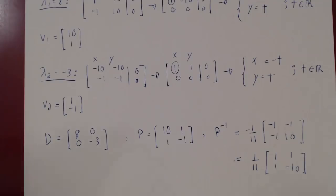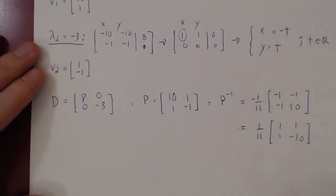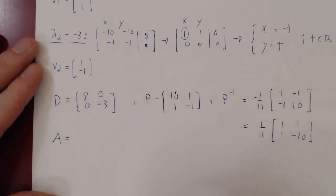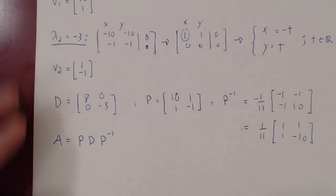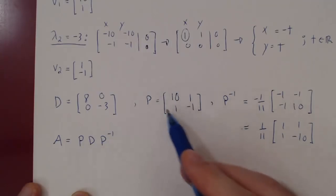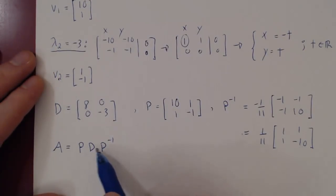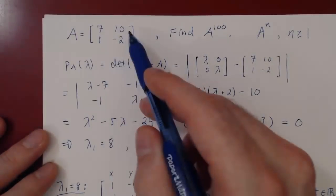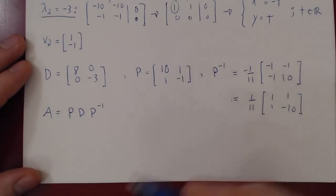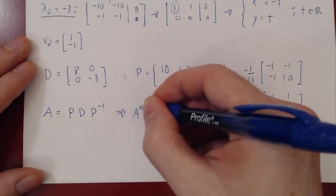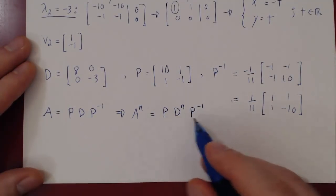Recall from the previous discussion that we rewrite A using A = P·D·P-inverse. You can verify this gives back [7, 10; 1, -2]. The key result is that the nth power of A is simply P·D^n·P-inverse, which should be fairly easy to compute since D is diagonal.